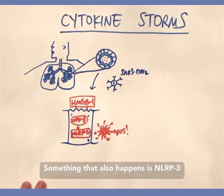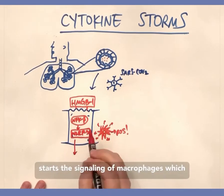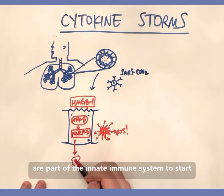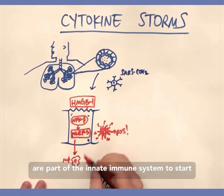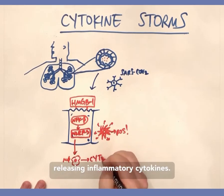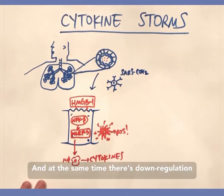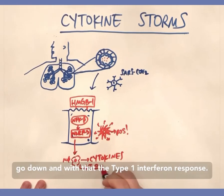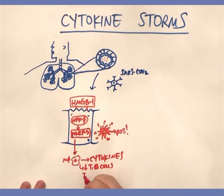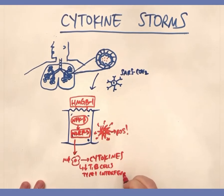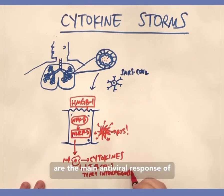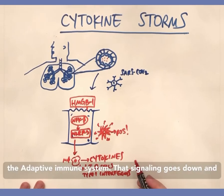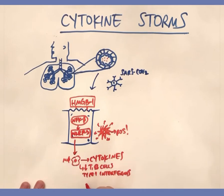Something that also happens is NLRP3 starts signaling macrophages, which are part of the innate immune system, to start releasing inflammatory cytokines. At the same time, there is down-regulation of the adaptive immune system — T cells and B cells go down. With that, the type 1 interferon response, which is the main antiviral response of the adaptive immune system, also goes down.